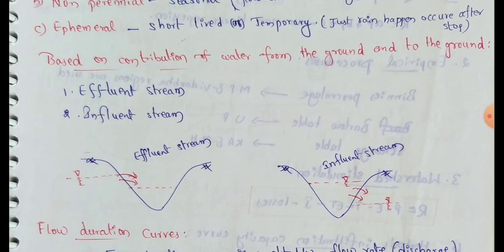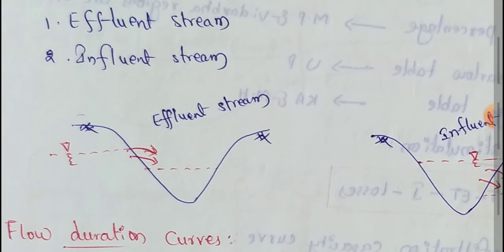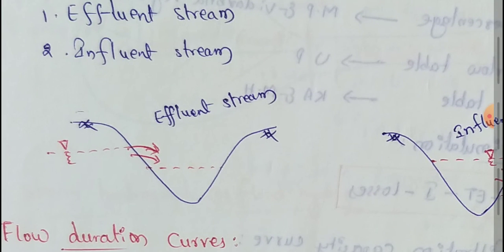For the effluent stream, groundwater comes out into the stream. The effluent stream flows through seepage from groundwater. When the groundwater table is above the water surface elevation in the stream, then the groundwater feeds the stream.